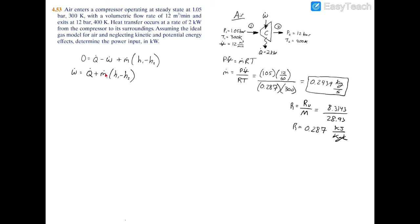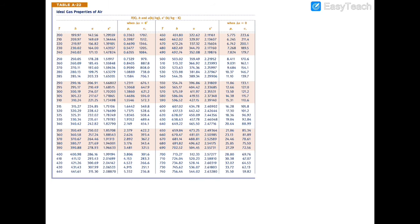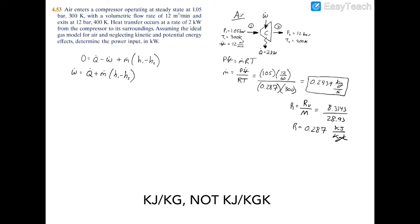So now we have the heat transfer and mass flow rate, but we still need to find these enthalpies. It's pretty easy to find enthalpy of air if you're given the temperature. Go to 300 Kelvin, and you have that the specific enthalpy is 300.19 kilojoules per kilogram. So I'll fill that in. H₁ equals 300.19 kilojoules per kilogram.